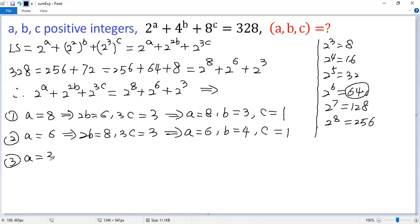Now the last case: if a equals 3, then 2b must be 8 because 2b cannot be 3. So 2b must be 8, then 3c must be 6.